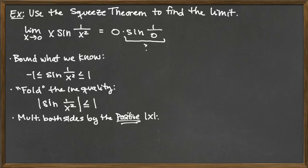And so what we do there is we've got the absolute value of x times the absolute value of sine of 1 over x squared, and then that's going to be less than or equal to the 1 times the absolute value of x, which would just be absolute value of x. So now here on the left-hand side, multiplying two absolute values would just be the absolute value of the product. So we're looking at x times sine of 1 over x squared in the absolute value less than or equal to absolute value of x.